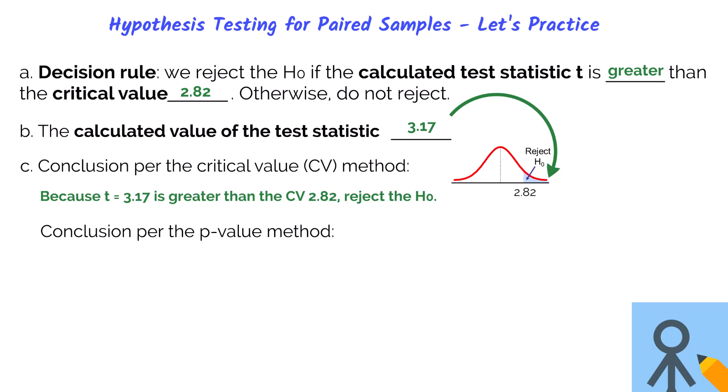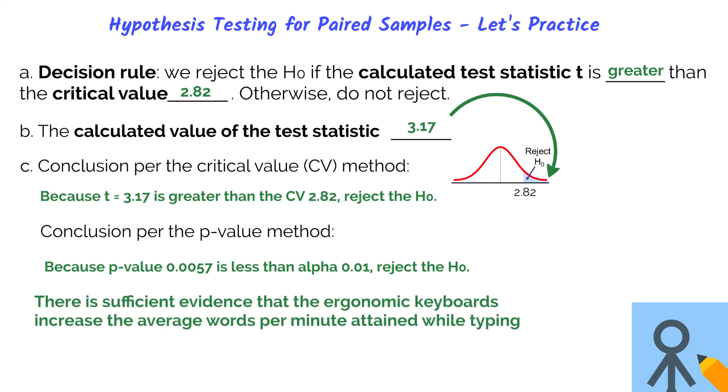Let's also review the decision per the p-value method. Since the p-value is 0.0057 and this is less than the alpha of 0.01, we also reject the null hypothesis here as well. You should always come to the same conclusion, so this is a good way of confirming you are using the correct output in Excel when making your decisions. Therefore, based on both hypothesis testing methods, there is sufficient evidence that the ergonomic keyboards increase the average words per minute attained while typing.